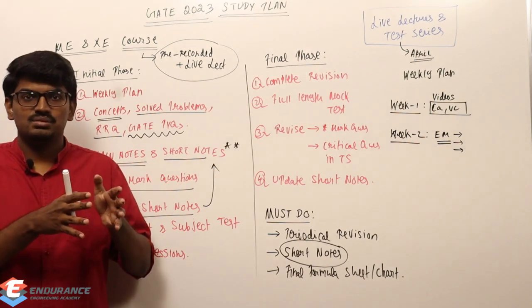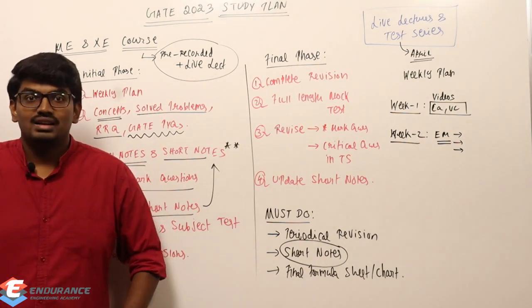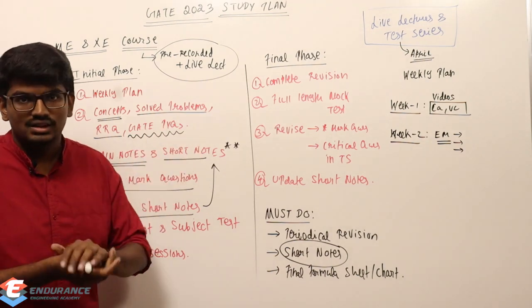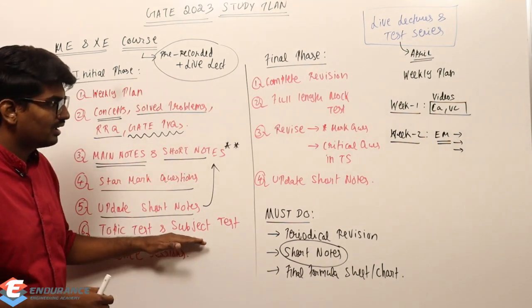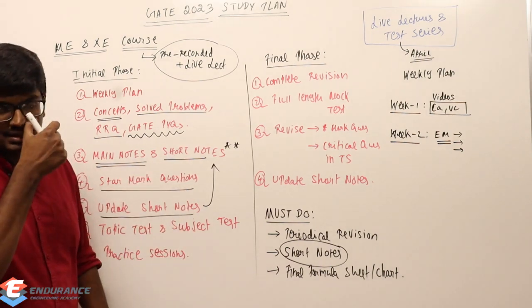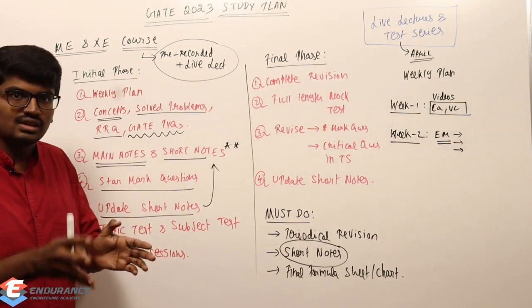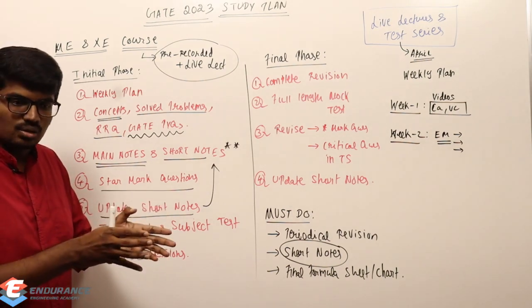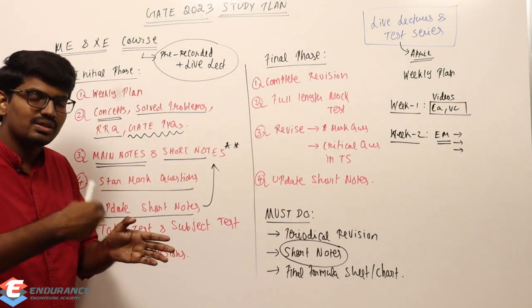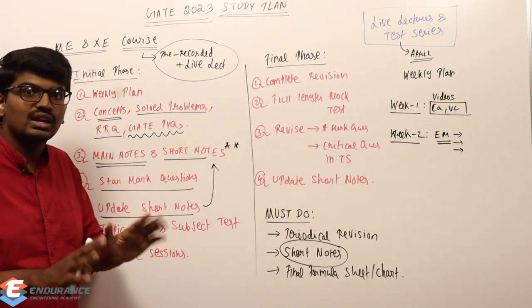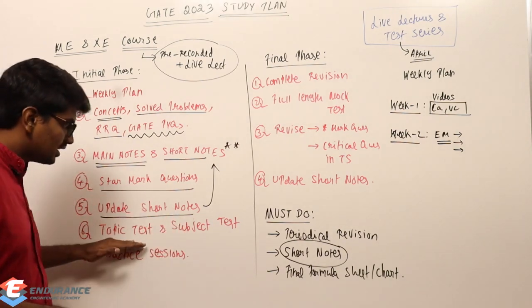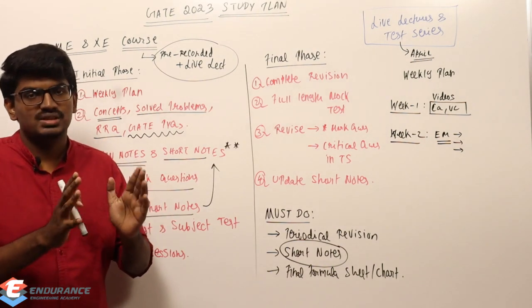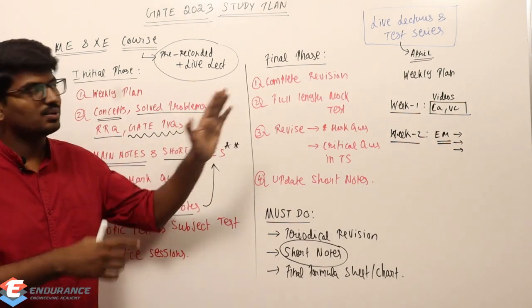If the test is available and you've completed the topic, write it immediately. If not available, wait 10–15 days and then write it after revising the topic. Subject tests and topic tests should be done during the initial phase. Full-length mock tests should be planned for the final phase. If you complete a topic and a test is not available, revise the topic once and write when it becomes available.